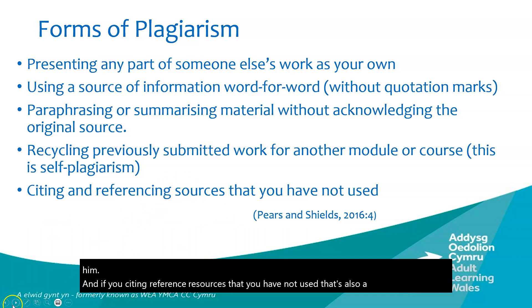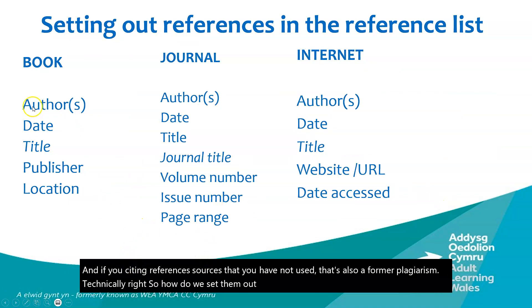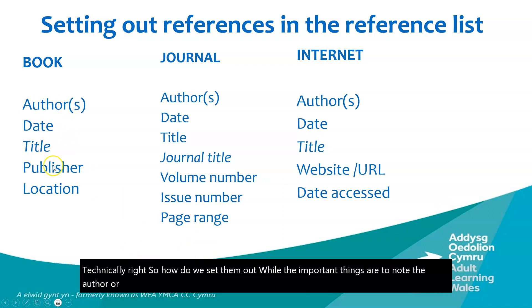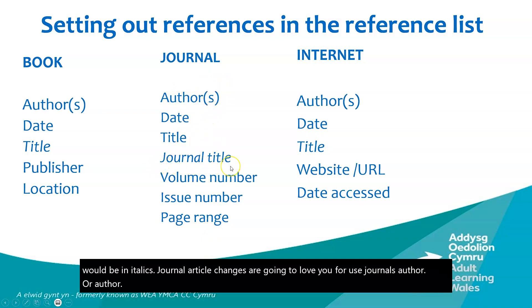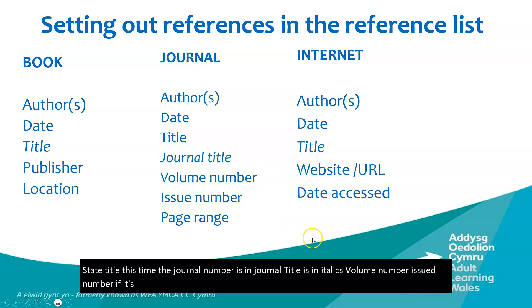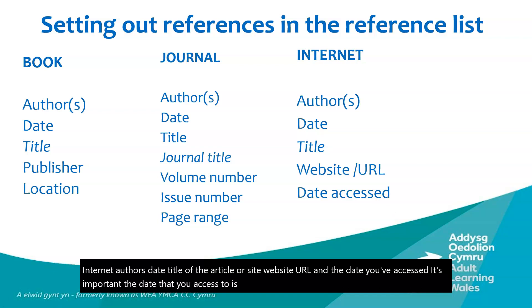How do we set references out? For a book: note the author or authors, state the title in italics, publisher, and location. Tutors will love you if you use journals — for a journal article: author or authors, date, title of the article, journal title in italics, volume number, issue number, page range. For internet sources: author, date, title of the article or site, website URL, and the date you accessed it — it's important to include the access date because websites can be updated.